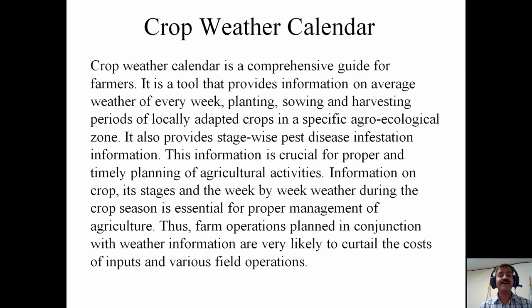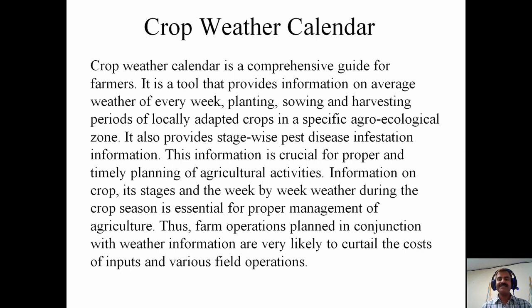When you put these three together, it becomes a comprehensive guide for the farmers — a guide that tells the farmer what operation should be taken and when. In abstract form, the crop weather calendar is a comprehensive guide for farmers. It is a tool that provides information on average weather of every week, planting or sowing of the crop, or harvesting period of the locally adapted crops in specific agroecological zones. It is a kind of schematic or drawing in which weather information plus crop management practices are arranged in a calendar.